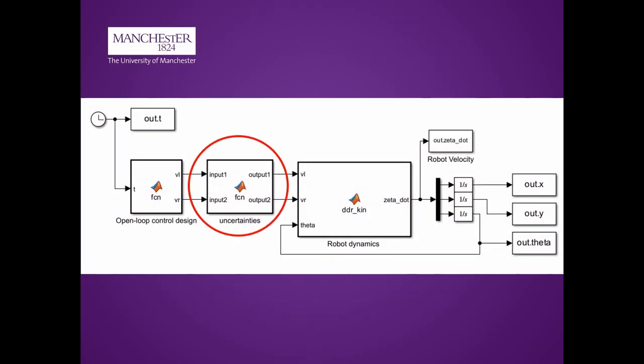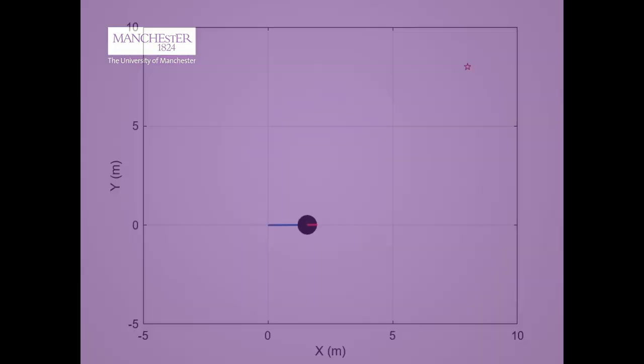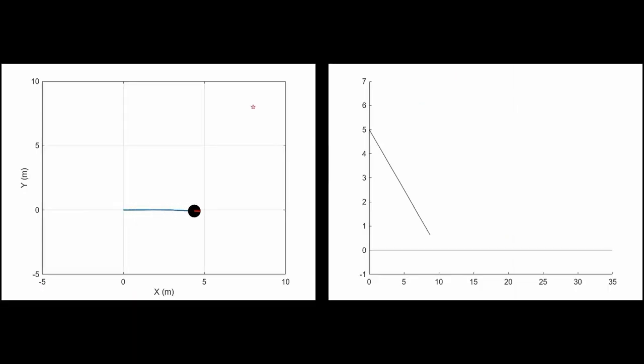If we then adapt our model to include randomly generated uncertainties in our velocity measurements, we can create a more realistic visualization. Here the deviation in path can be clearly seen, as our error increases to around 0.09, almost a factor of 100 larger than before.